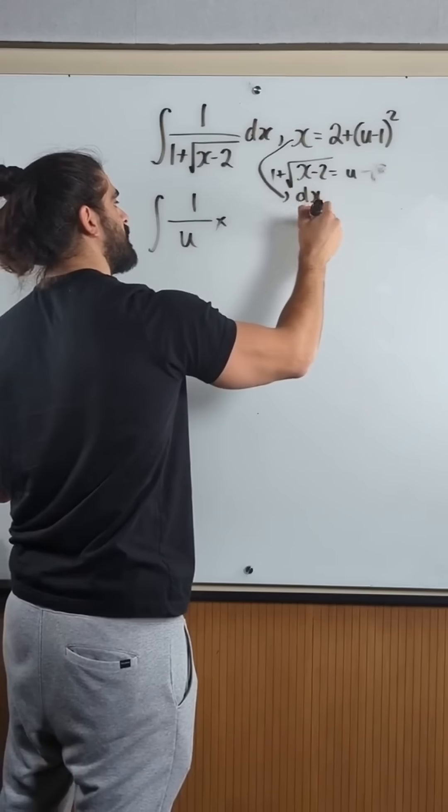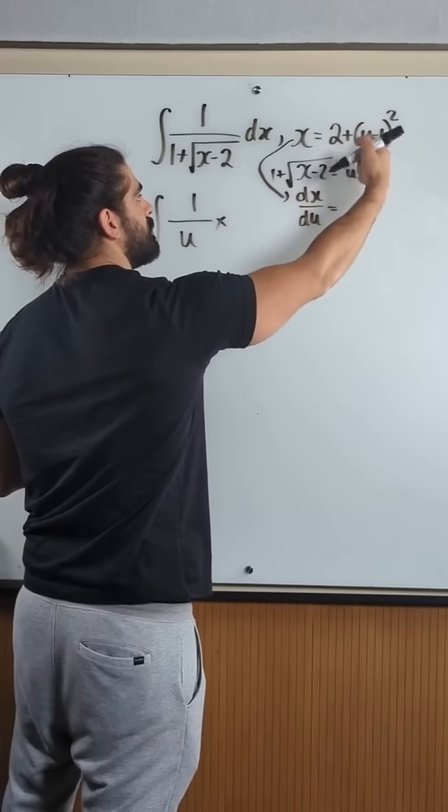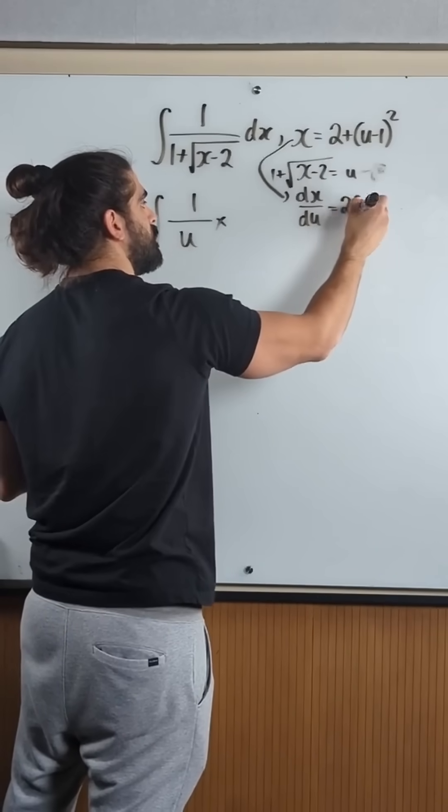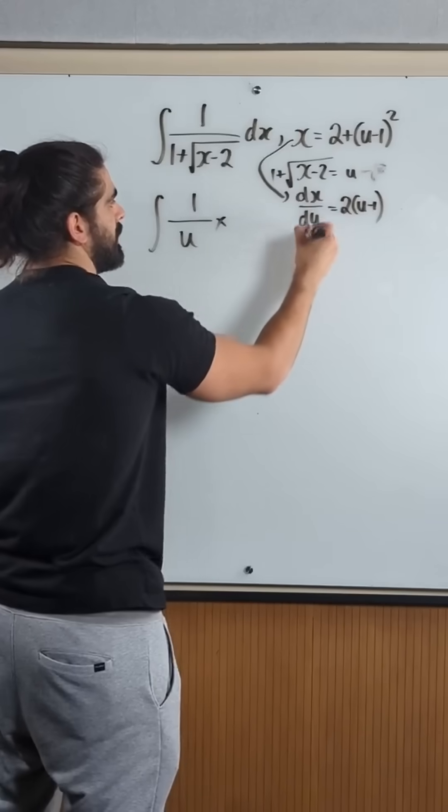Differentiating x with respect to u, 2 just goes, bring down the 2, knock 1 off the power, because this angle, when you differentiate, you just get 1, right? So you get 2, u minus 1, du.